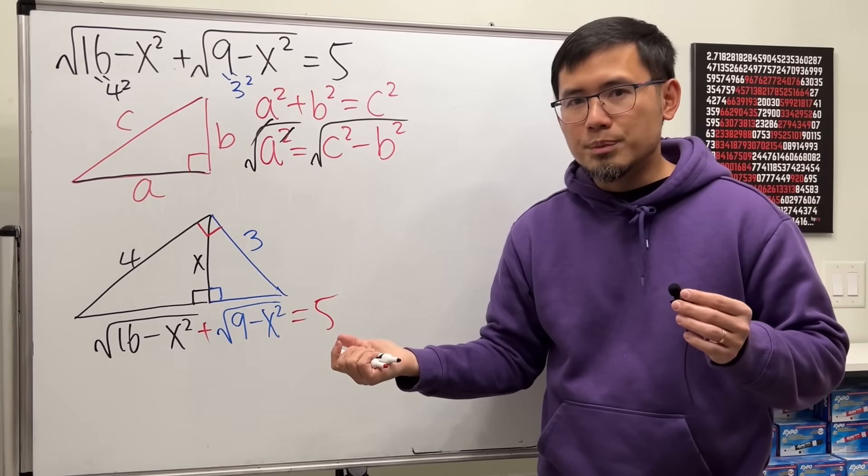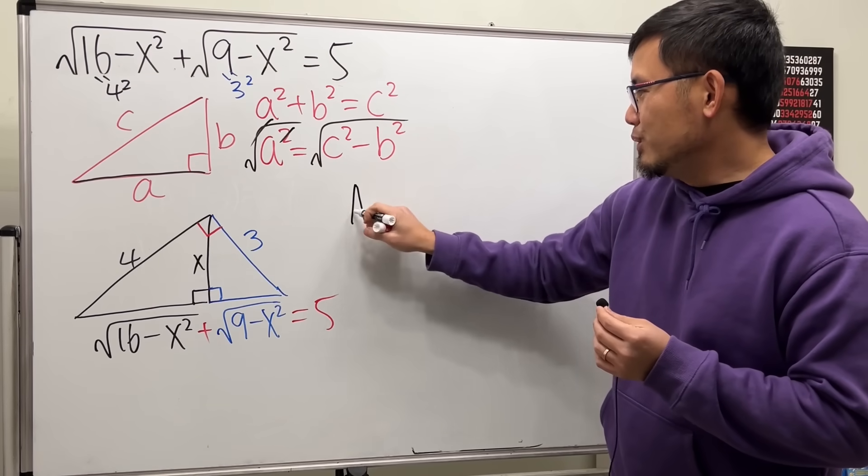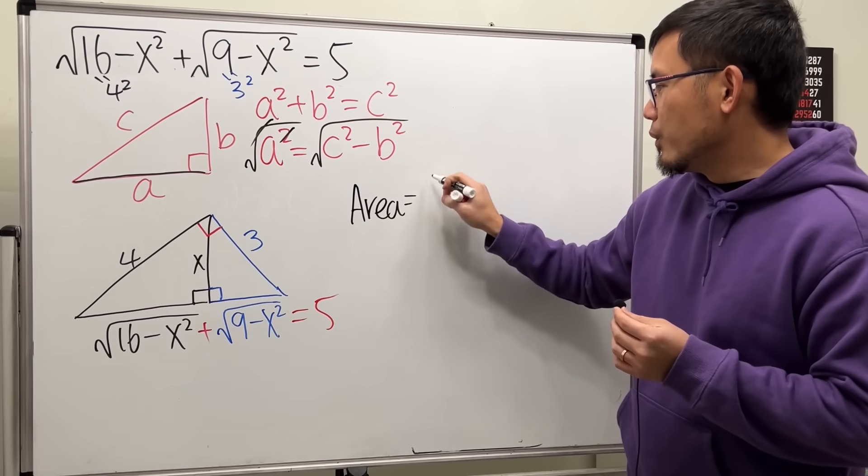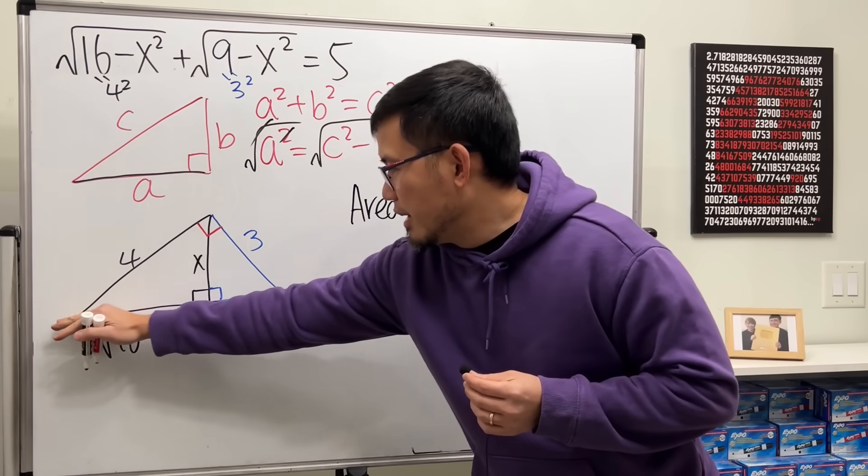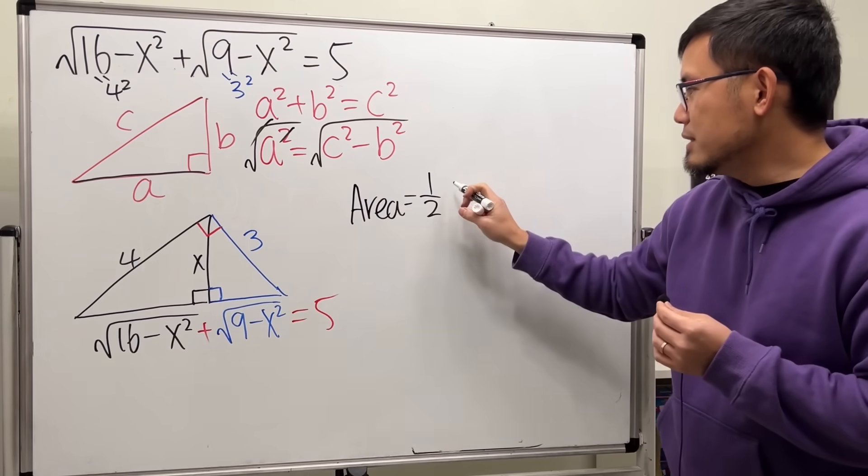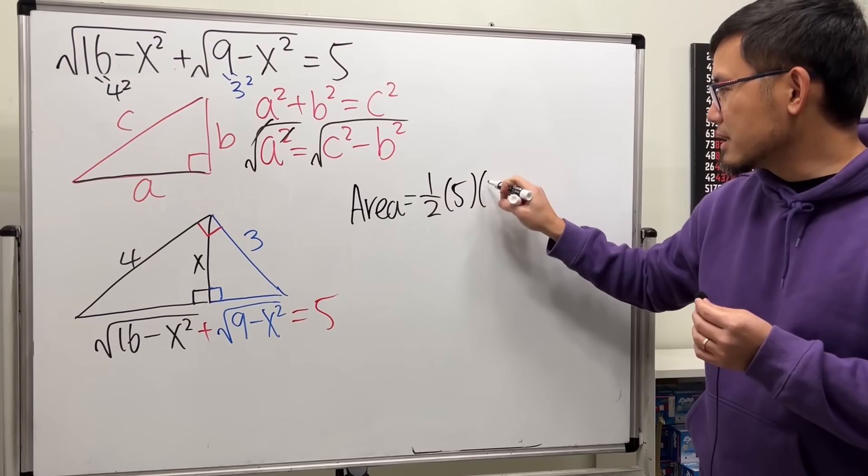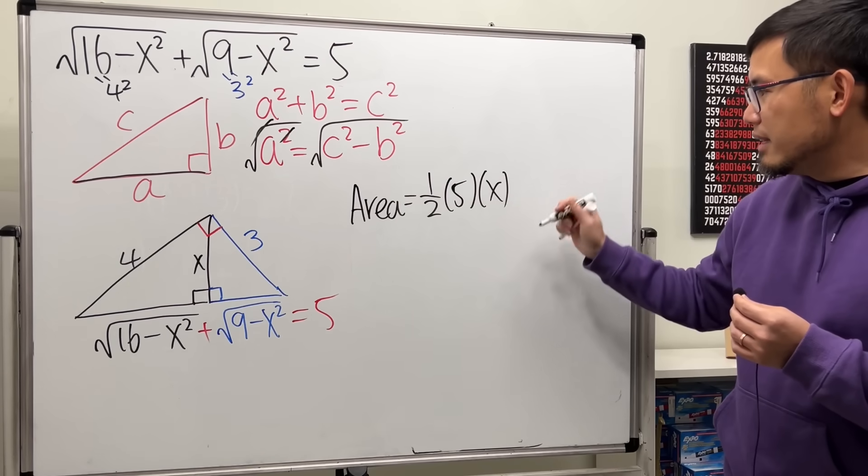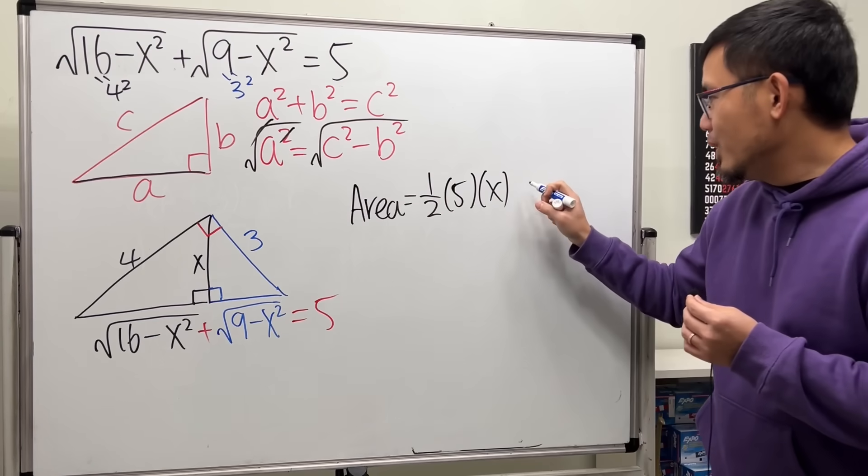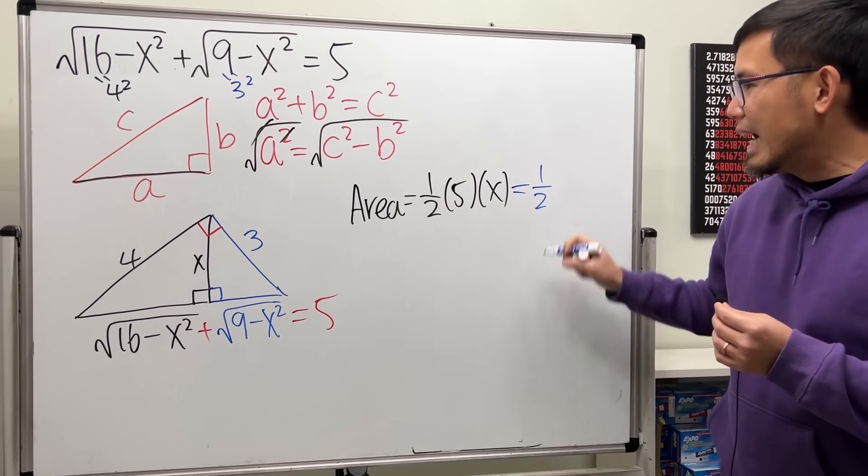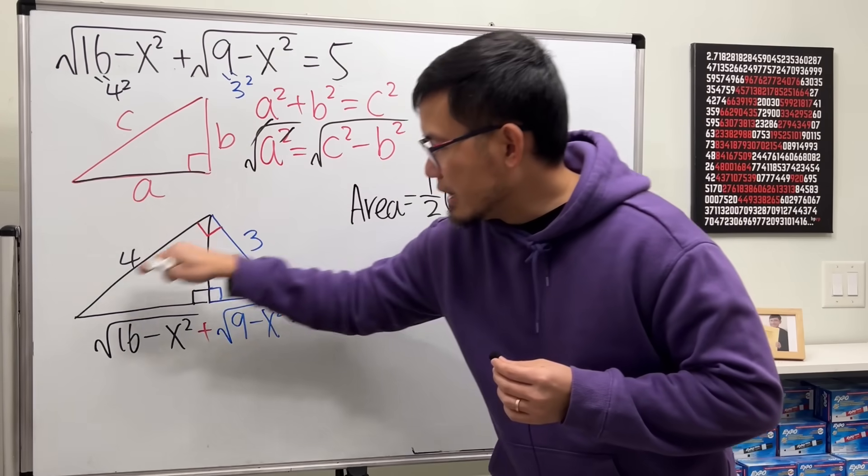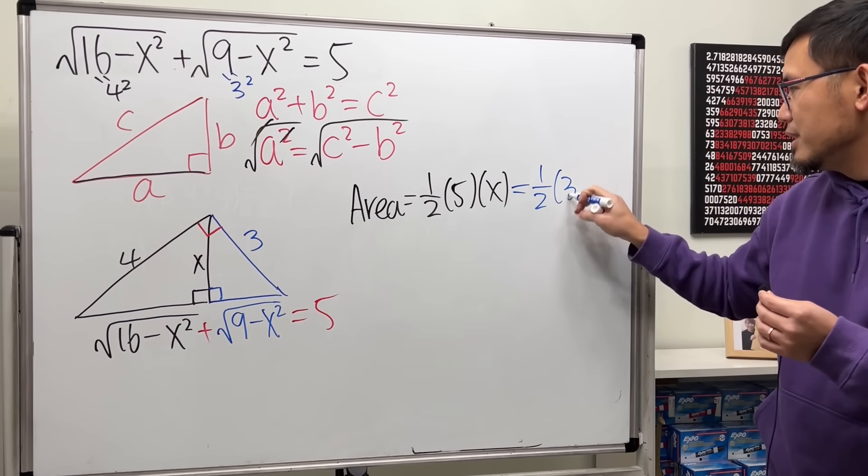And the area has to be equal. So, if you look at the area where we have 1 half, take this for the base and that for the height first. So we have 5 times x. And then that must be equal to 1 half times this for the base and that for the height. So, 3 times 4.